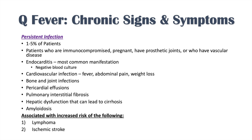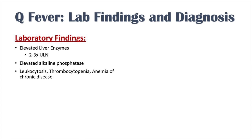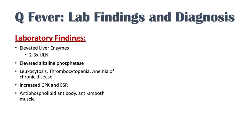Q fever can have incredibly variable clinical presentations, which is why it is so hard to diagnose and treat. Laboratory findings include elevated liver enzymes (2 to 3 times upper limit of normal), elevated alkaline phosphatase, leukocytosis, thrombocytopenia, and anemia of chronic disease especially in chronic Q fever. We can also see increased CPK and ESR, antiphospholipid antibodies, and anti-smooth muscle antibodies. Blood cultures are usually negative because Coxiella burnetti is incredibly difficult to culture.